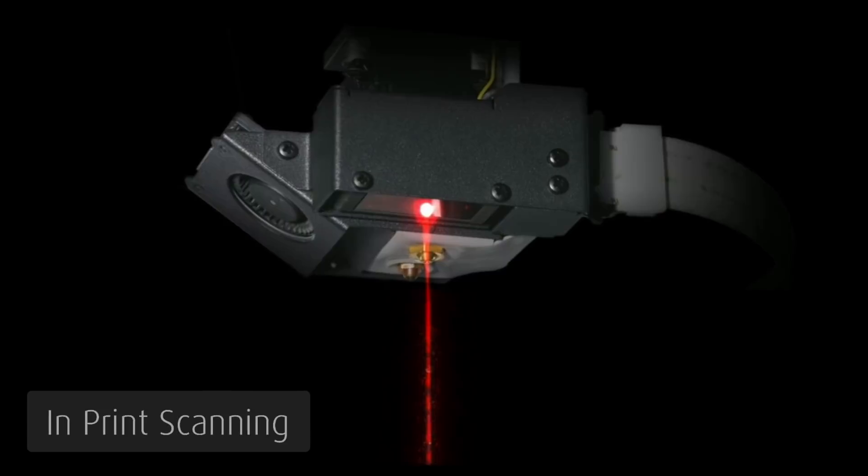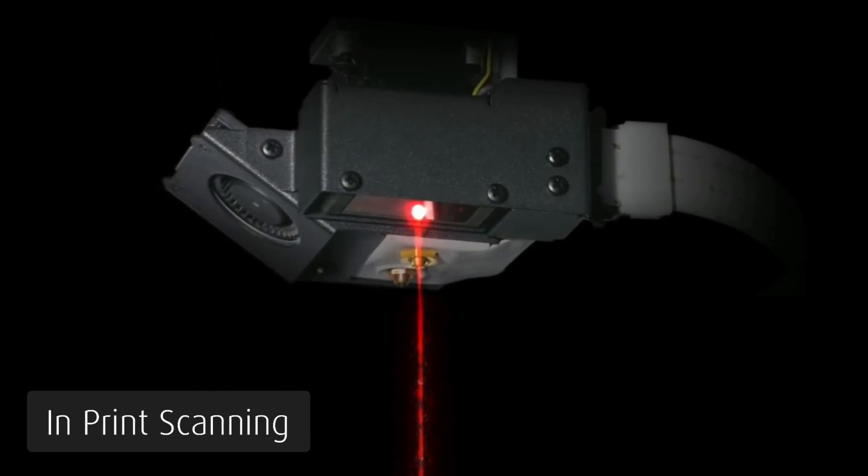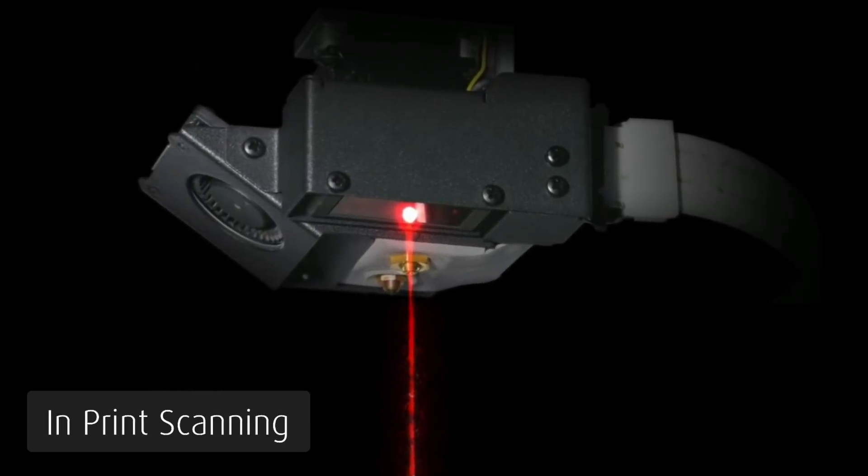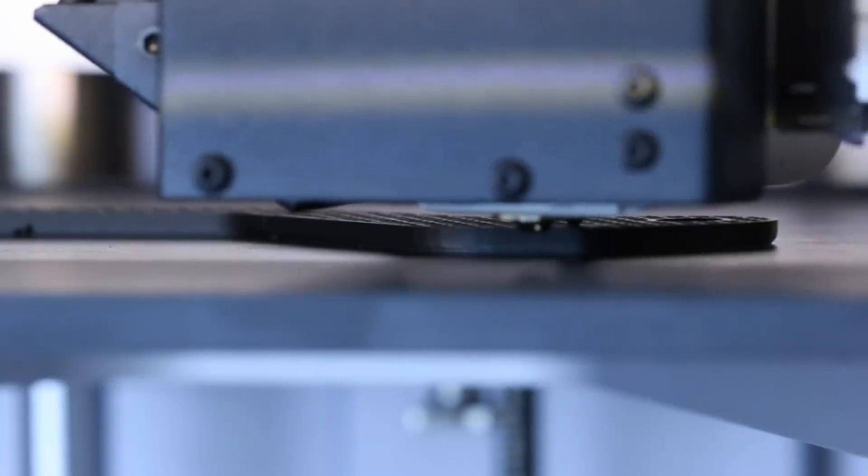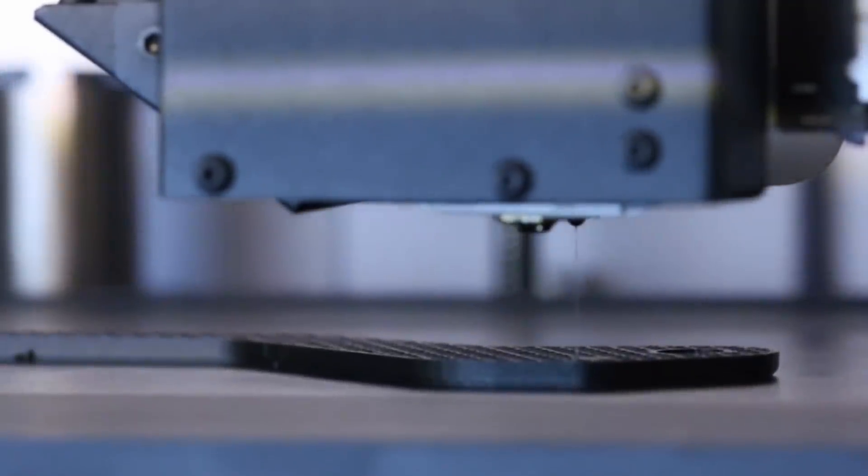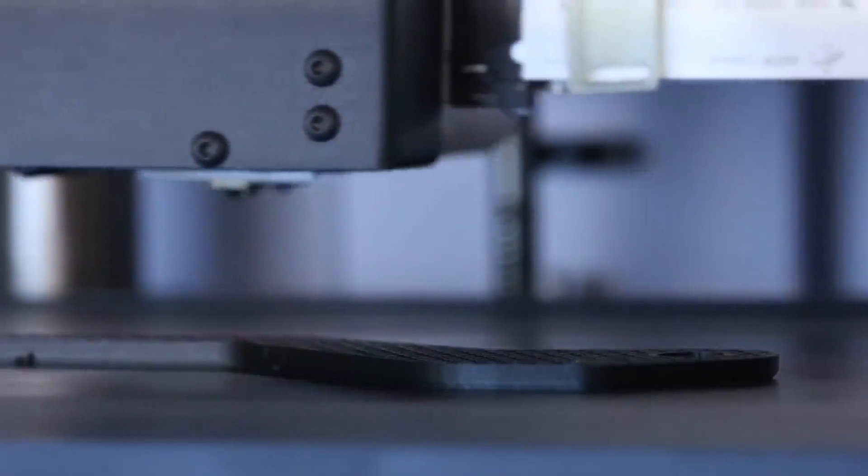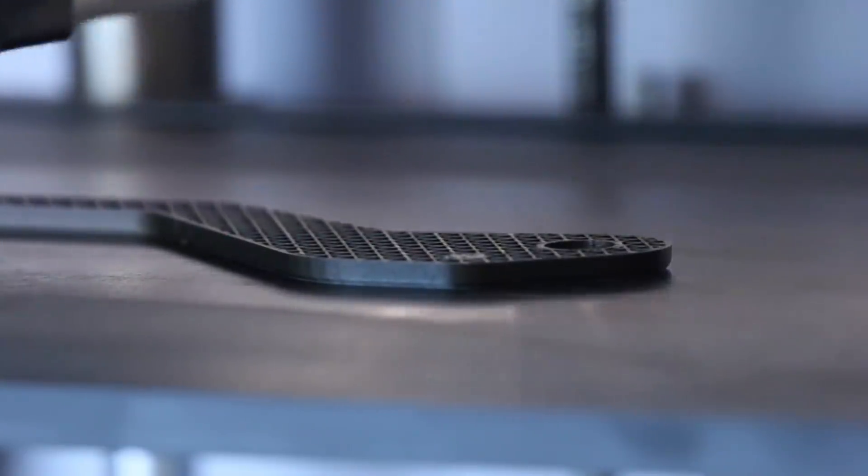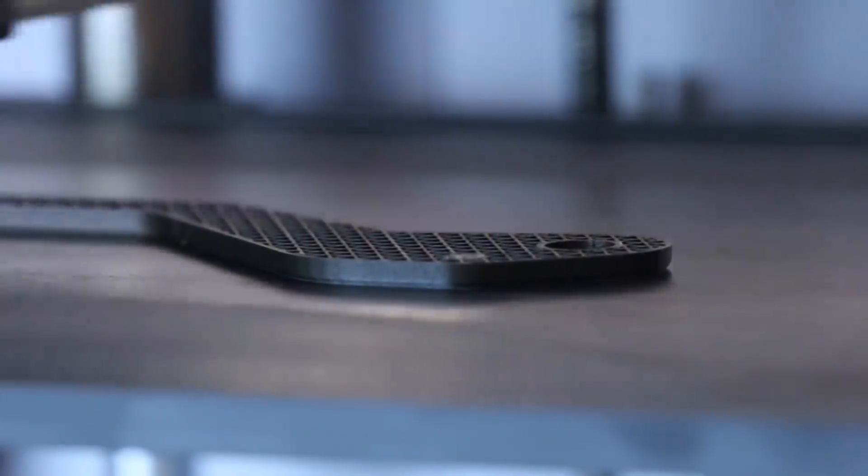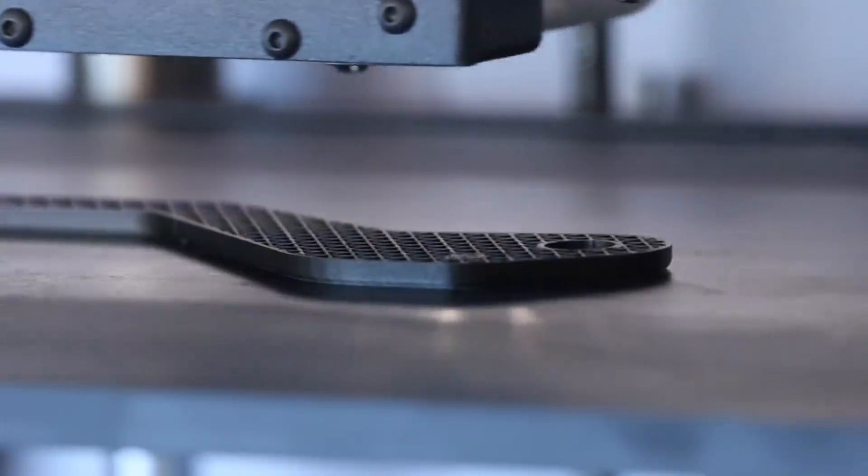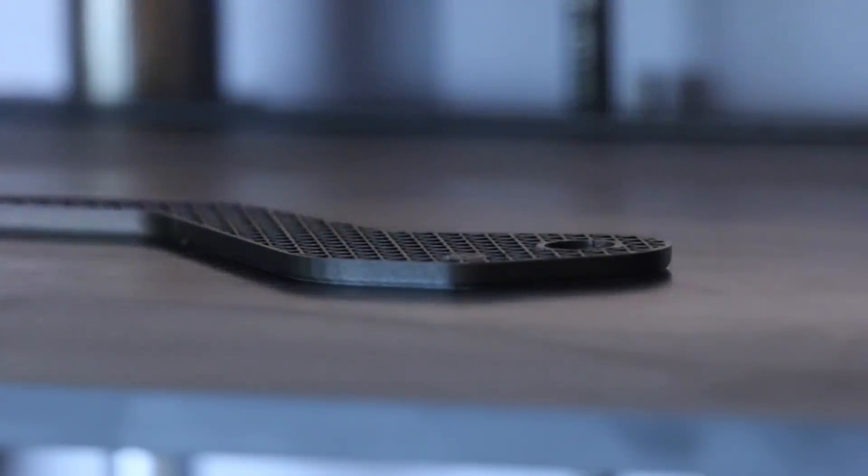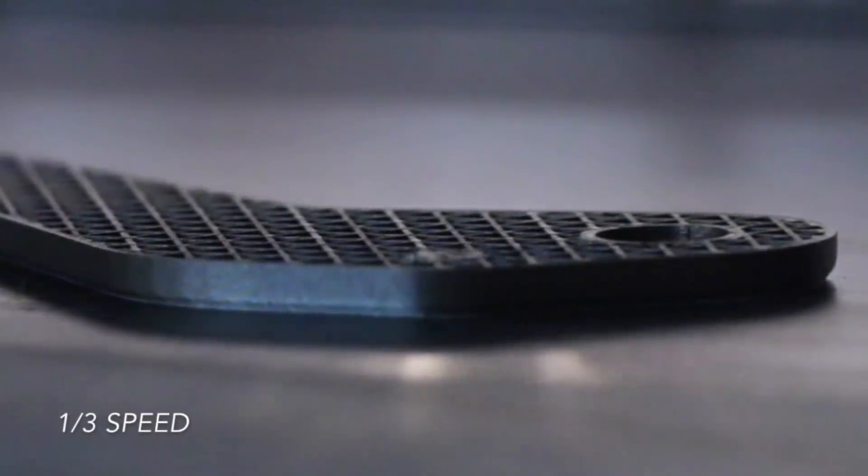So what Markforged have done is add, for the first time in 3D printing, in-process inspection with a 12.5 micron laser mounted on the print head. This beautifully integrated laser will allow you to, in real time, print your part, scan your part and measure the dimensional accuracy of that part to make sure not only do you get a strong part, but you get the right strong part and the right shape to do exactly what you need. Think about how this might fit into your ISO 9001 Quality Management.